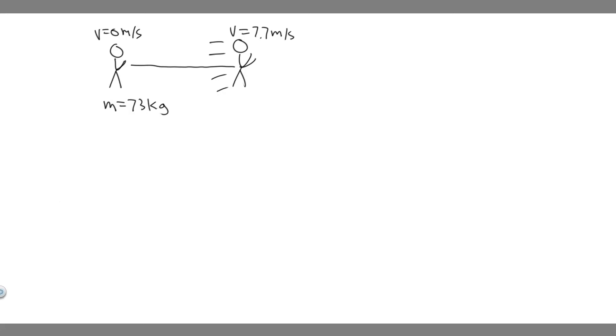In this problem, we're told how much work is needed for a 73-kilogram runner to accelerate from rest to 7.7 meters per second. The first thing you always want to do is draw what's going on.